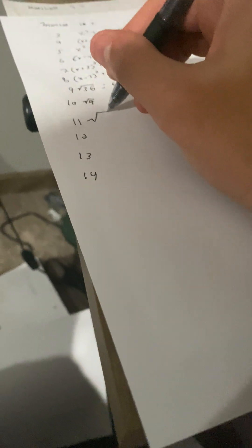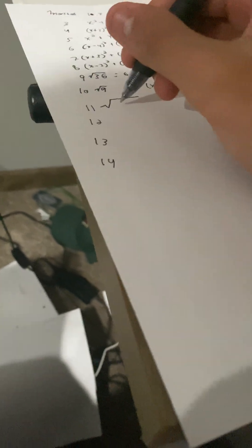I gotta write the distance formula. Let's go. I hate this stupid formula. Three squared plus negative seven squared. I hate doing this distance formula.